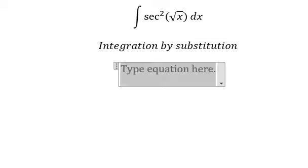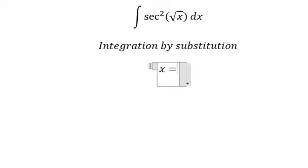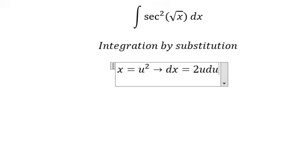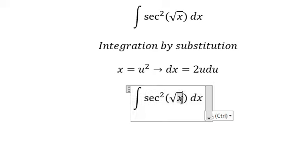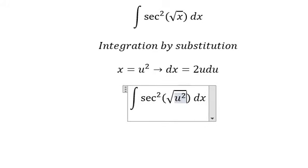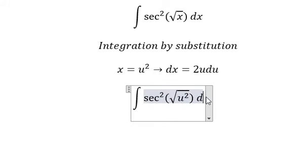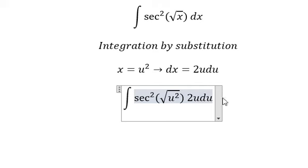We put x equal to u squared because we want to cancel the square root. dx equals 2u du. So we put u squared in here. dx we change for 2u du and it equals u in here.